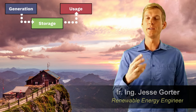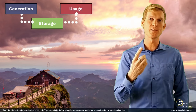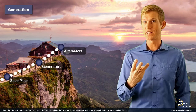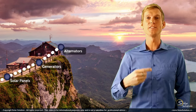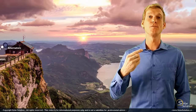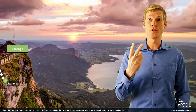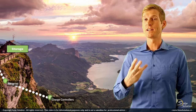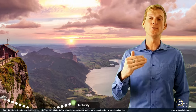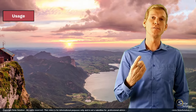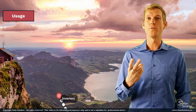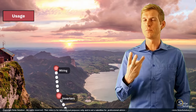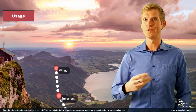Zooming in on those three sections, the first one on generation will look at solar panels, generators, and alternators. The second section for storage will look at batteries, charge controllers, and the fundamentals of electricity. And the last section on usage will look at inverters, wiring, and the basic safety features — your breakers and your fuses.